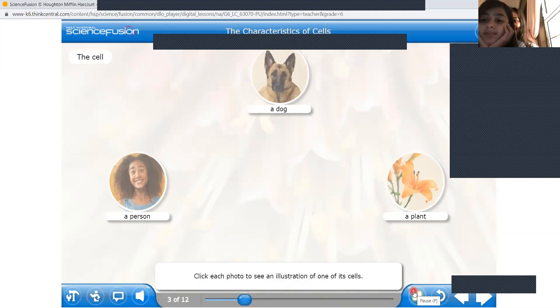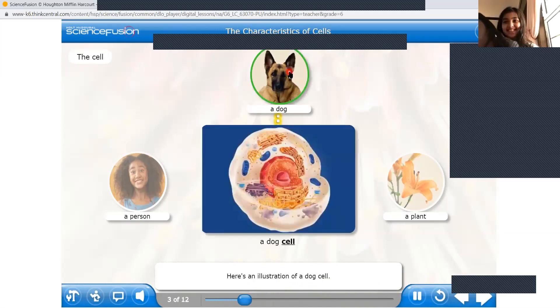Click each photo to see an illustration of one of its cells. Here's an illustration of a dog cell. Notice the small shapes inside the cell. These are called organelles, which are whatever parts. Like example, my body is made of different parts and I call them as organ. Like that, the cell also has many different organs. That's why it's called as organelles. The small parts inside the cell, the different parts are called as organelles, which are basically the cell's organs.